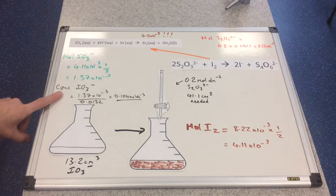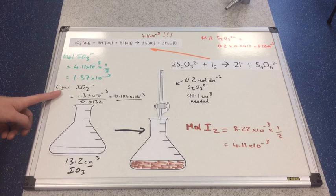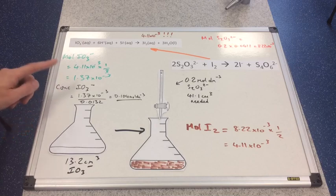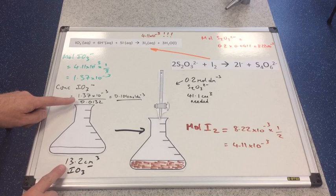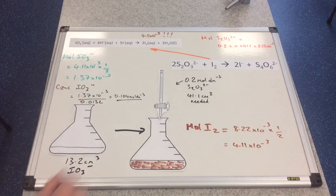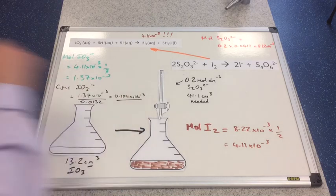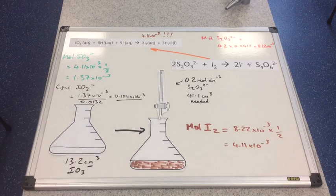Now we can calculate the concentration of the oxidizing agent, the IO3⁻ ion. It's the moles divided by the volume — 13.2 cm³ in dm³. To three significant figures that comes out at 0.104 mol dm⁻³.